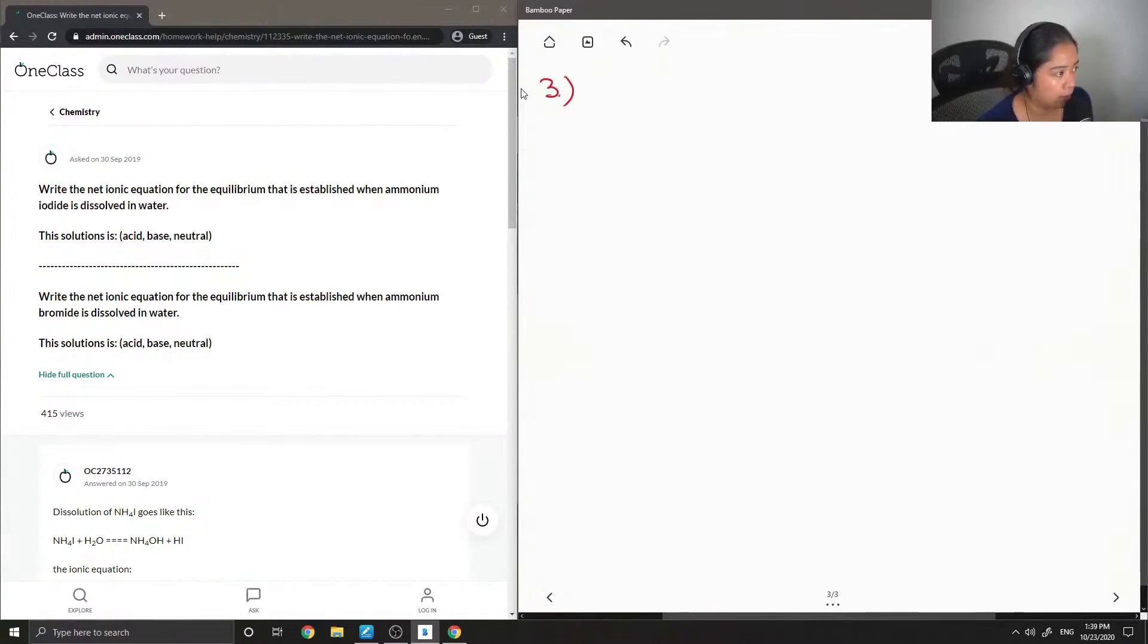Write the net ionic equation for the equilibrium that is established when ammonium iodide is dissolved in water. Okay, so first let's write the dissolution.